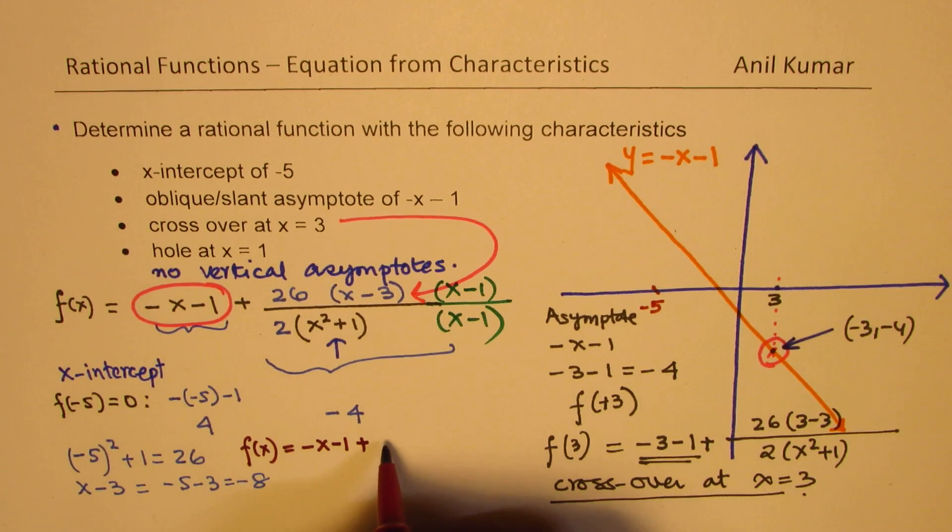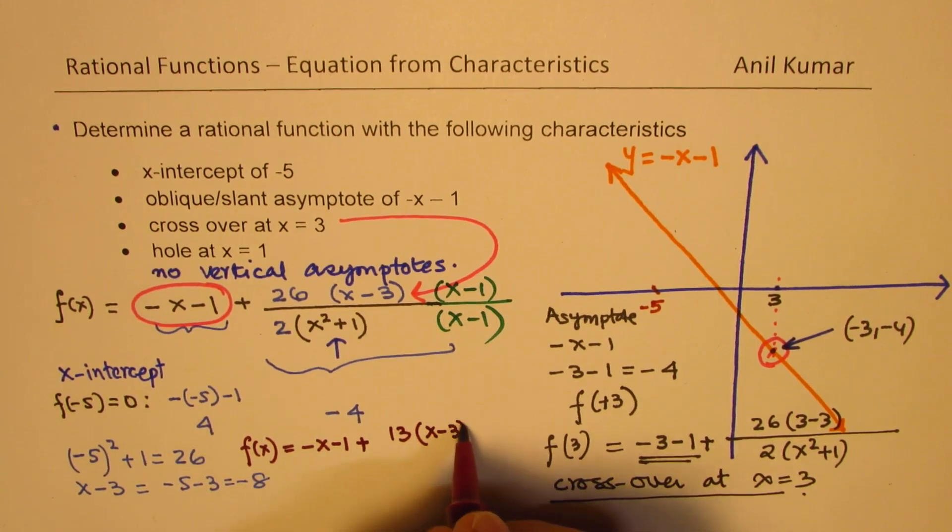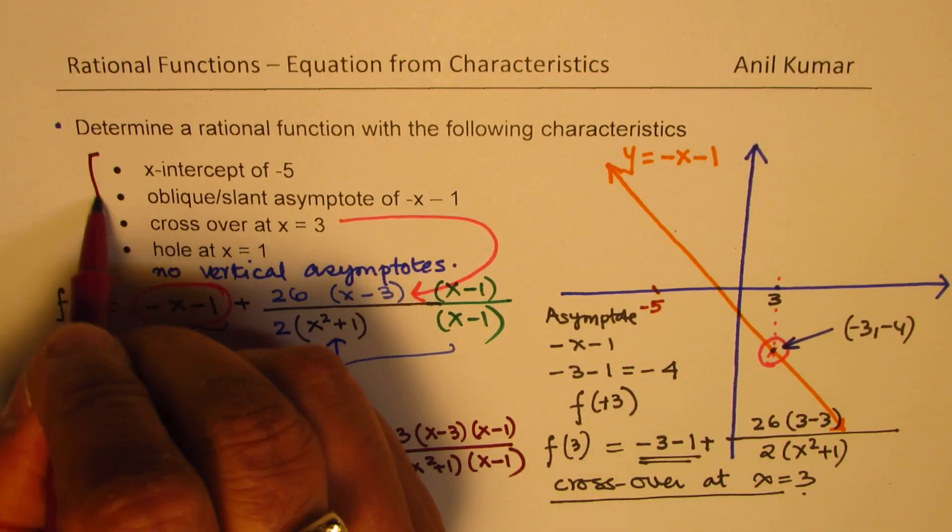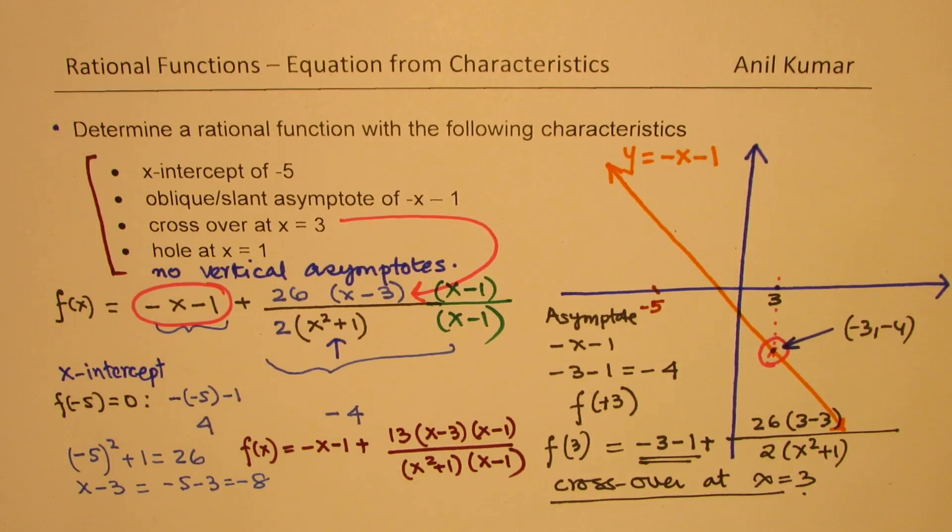we can simplify this, but you have understood this strategy. 13 times x minus 3 times x minus 1 over x squared plus 1 times x minus 1. And that will meet all these conditions.